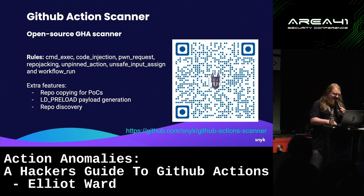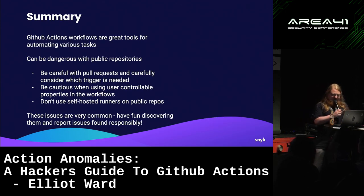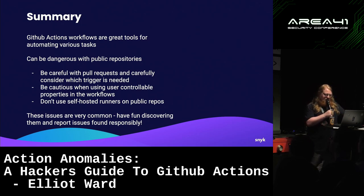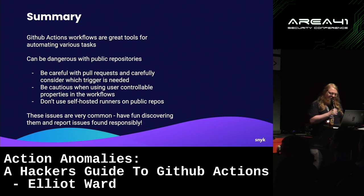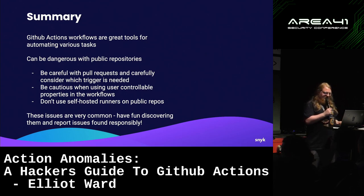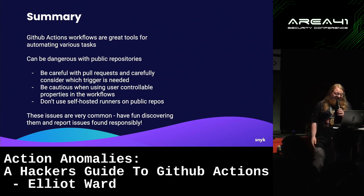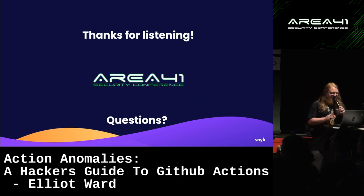To summarize: GitHub Action workflows are great tools for automating tasks in the development lifecycle, but we need to be careful when used with public repositories. Be careful with pull requests and use the correct event triggers. Be cautious when using user-controllable properties in workflows. Don't use self-hosted runners for public repositories. These issues are very common, so have fun discovering them, report your issues responsibly, and thanks for listening.